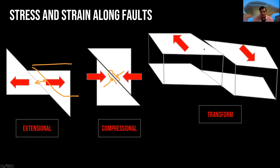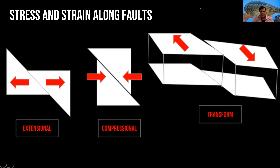We also have the transform fault. That happens when the surface moves in one direction and the other moves in the opposite direction. For example, if you have a wall located here and the wall moves where you have the earthquake, you will have one piece of the wall here and the other piece there. They may break because of that movement, and those kinds of earthquakes have very dangerous effects.